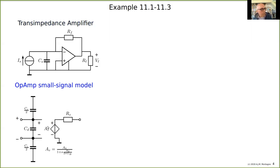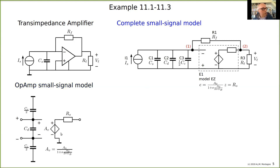This is the model of the operational amplifier I want to use. It has a differential mode input capacitance, a common mode input capacitance split over two capacitances, and a voltage gain with one pole assumed for now, and a DC output resistance. The plus input is connected to ground, so it is shorted, and we only have half of the common mode capacitance here.